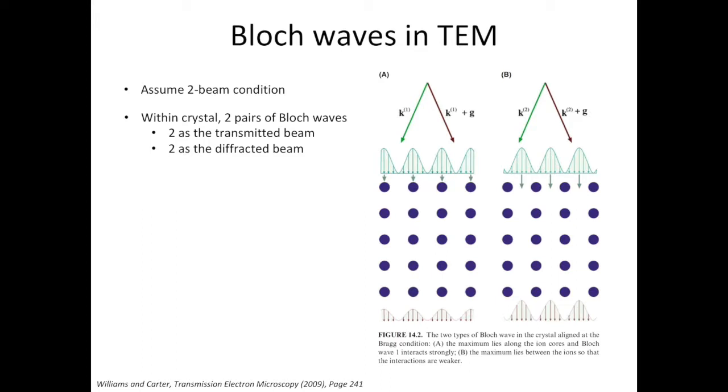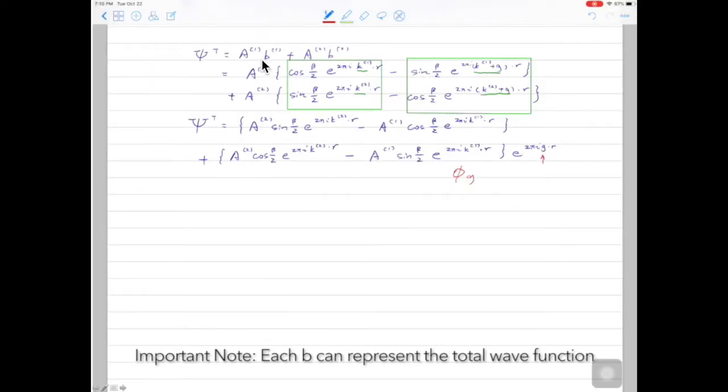Note that the phi0 and the phiG we dealt with in the previous few videos, they are not solutions to the Schrödinger's equation. Therefore, they actually do not exist inside the crystal. Let's do a very quick recap. The wave function b1 can be expressed as a function of k1 and k1 plus g. Similarly, the wave function of b2 can be expressed by k2 and k2 plus g. Both b1 and b2 are pairs of Bloch waves.